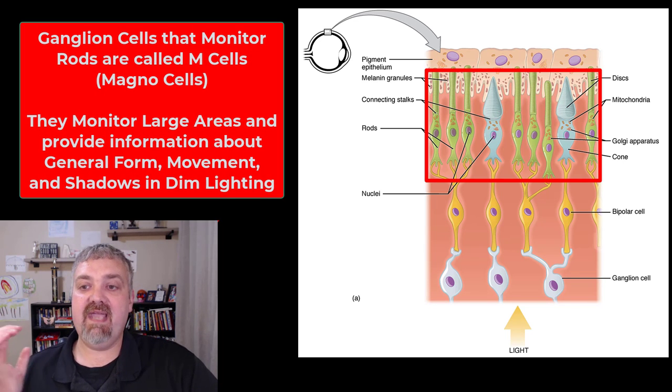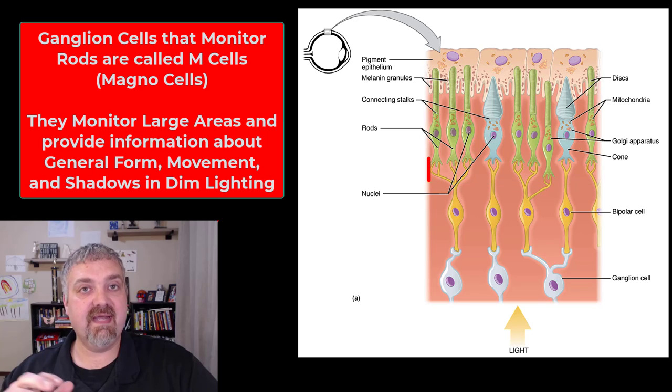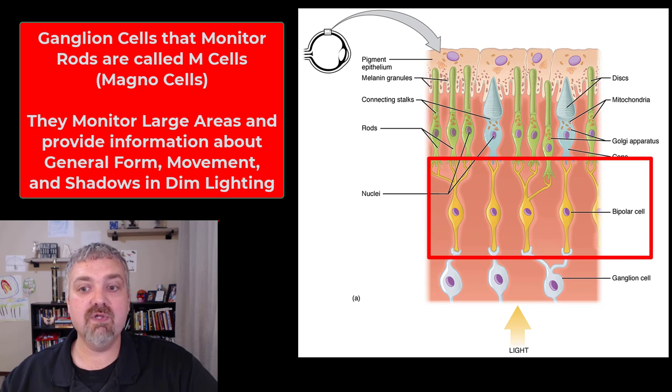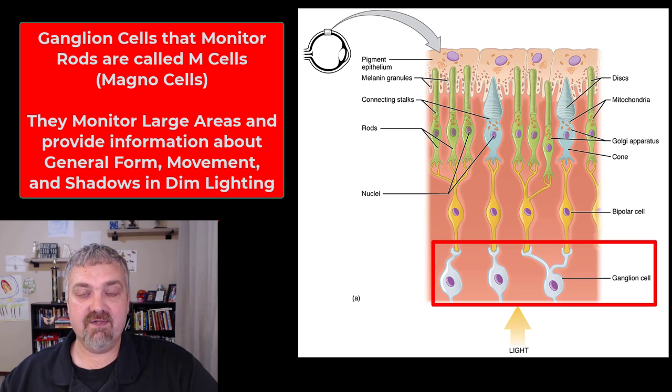Here we see that we have your photoreceptors, your rods and cones, and they're connected to those special sense neurons, the bipolar neurons that are connected to ganglion cells. One last thing to say about rods and cones: the actual ganglion cells that monitor them are different too.